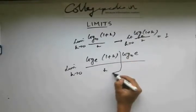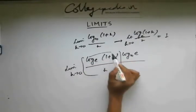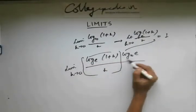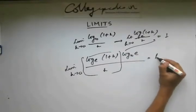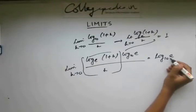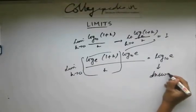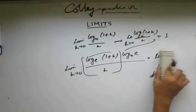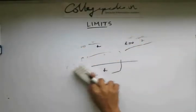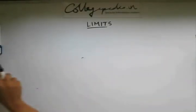Now this term, this term is the same as this term. So it is 1. So the answer is 1 into log e base 10. Or the answer is this. This is the answer. Now let's take one last example on logarithmic limits and then let's proceed to the next section.